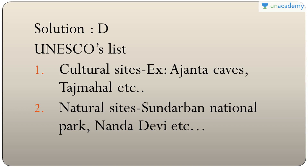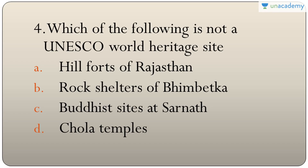For example, cultural sites in India include Ajanta caves and Taj Mahal, and natural sites include Sundarbans National Park and Nanda Devi. Question four: which of the following is not a UNESCO World Heritage Site — hill forts of Rajasthan, rock shelters of Bhimbaithika, Buddhist sites at Sarnath, or Chola temples? Buddhist sites at Sarnath specifically is not listed — the answer is C.